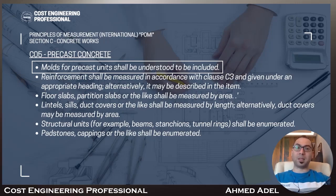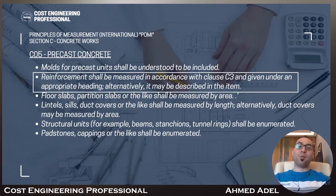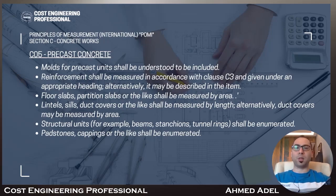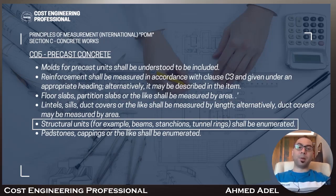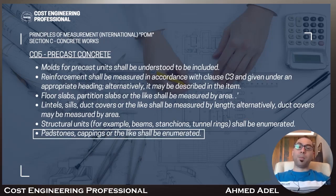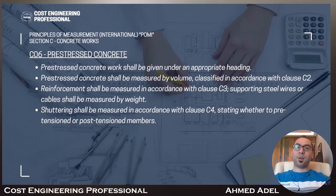Subsection C5 is precast concrete. Molds for precast units shall be understood to be included in the rate. Reinforcement shall be measured in accordance with subsection C3 and given under an appropriate heading, or it may be described within the item. Floor slabs and partition slabs shall be measured by area. Lintels, sills, and duct covers shall be measured by length — alternatively, duct covers may be measured by area. Structural units such as beams, stanchions, and tunnel rings shall be enumerated, as shall padstones and cappings.